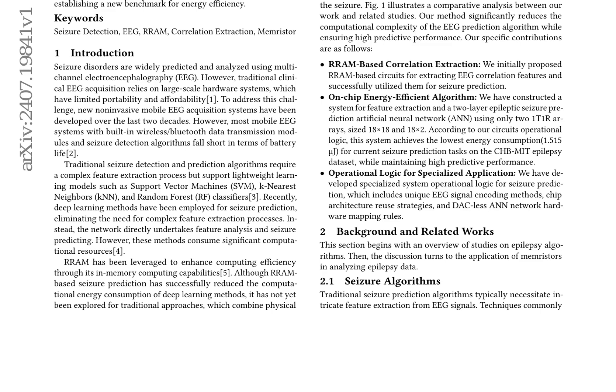The system uses two 1T1R arrays, sized 18x18 and 18x2, and achieves a high average sensitivity of 91.2% and a low false positive rate per hour (FPR/H) of 0.11 on the CHB-MIT seizure dataset. The chip under simulation demonstrates an area of approximately 0.83 square millimeters and a latency of 62.2 microseconds. Power consumption is recorded at 24.4 milliwatts during the feature extraction phase and 19.01 milliwatts in the seizure prediction phase, with a cumulative energy consumption of 1.515 microjoules for a three-second window data processing, predicting 29.2 minutes ahead. This method exhibits an 81.3% reduction in computational energy relative to the most efficient existing seizure prediction approaches, establishing a new benchmark for energy efficiency.